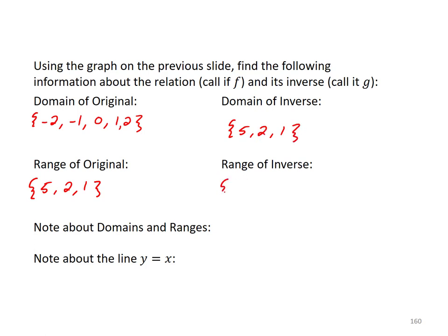And the range of the inverse was negative 2, negative 1, 0, 1, and 2. Note, the domain and ranges, there's a pattern here. The domain of f is the range of g, and the range of f is the domain of g. They are interchanged. As we said, we interchanged the x and the y coordinates, so that only makes sense.